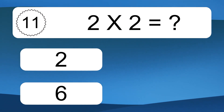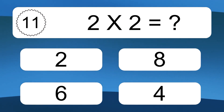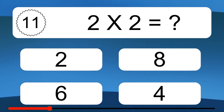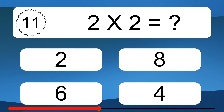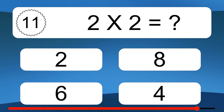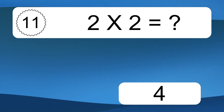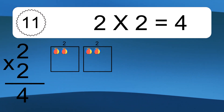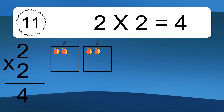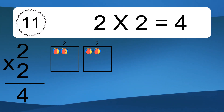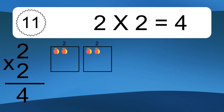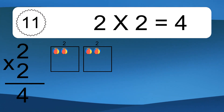2 times 2 equals what? 2 times 2 equals 4. We have 2 boxes, and each box has 2 colorful balls inside. If you count all the balls in all the boxes together, you will have 2 times 2 balls. This equals 4 balls.